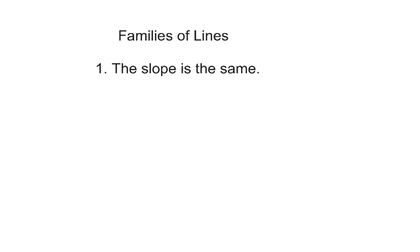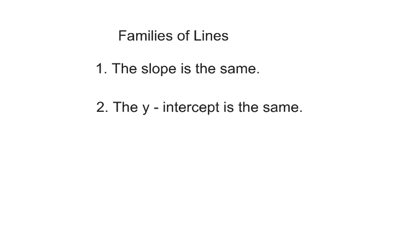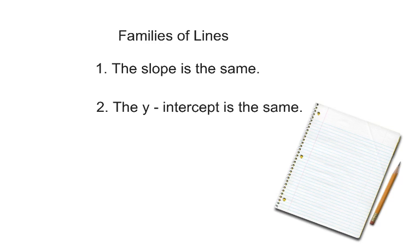Did you know that there are families of straight lines? There are two different families of straight lines. The first family of lines are lines where the slope is the same. The second family of lines is where the y-intercept is the same. Take a minute to write this down in your notebook.